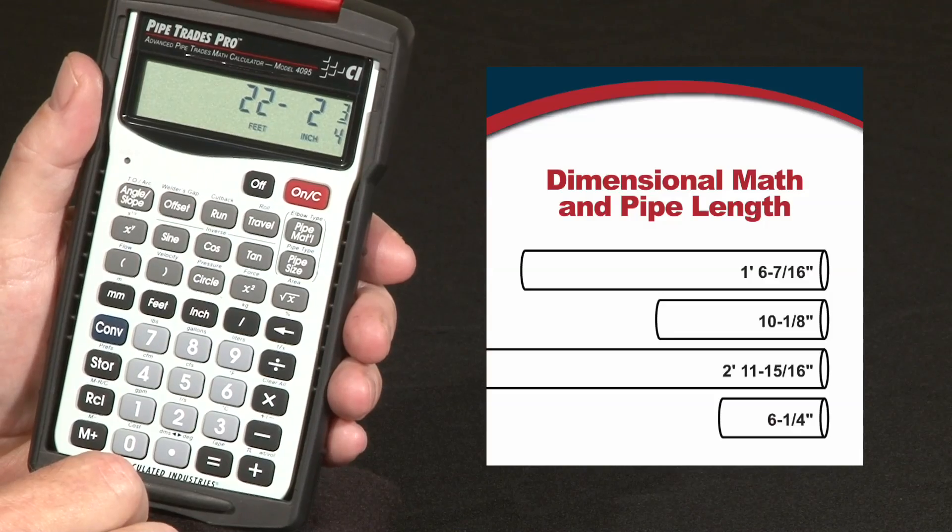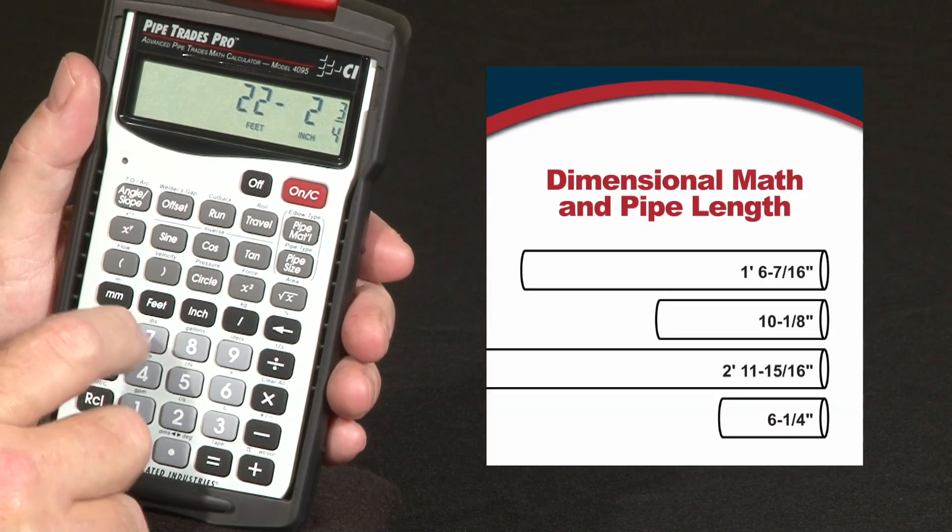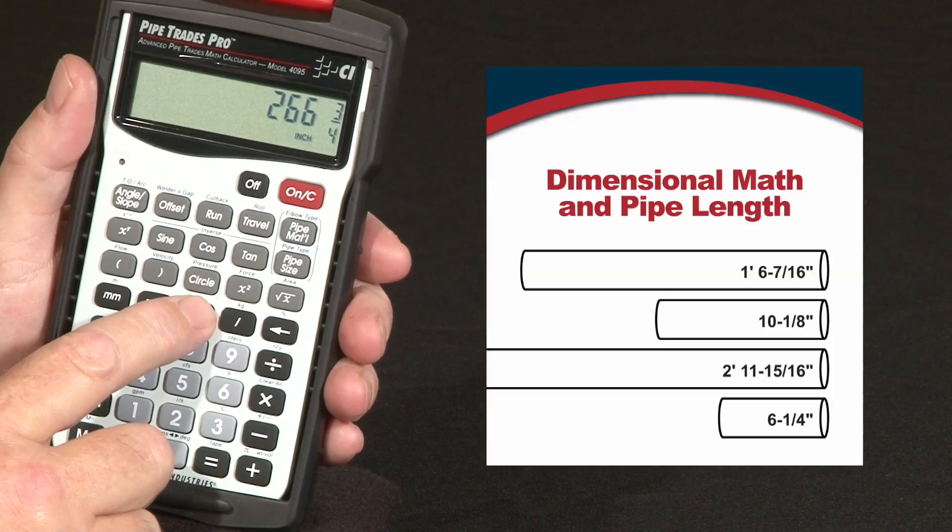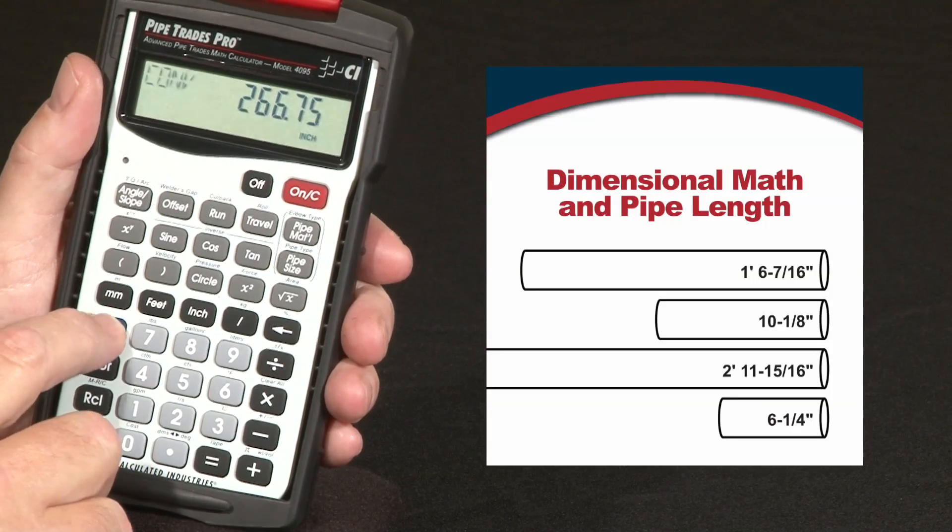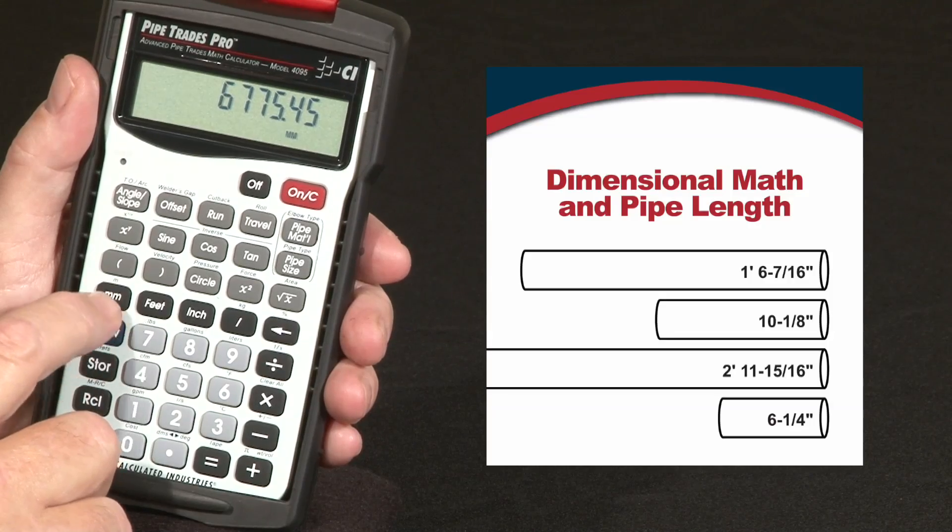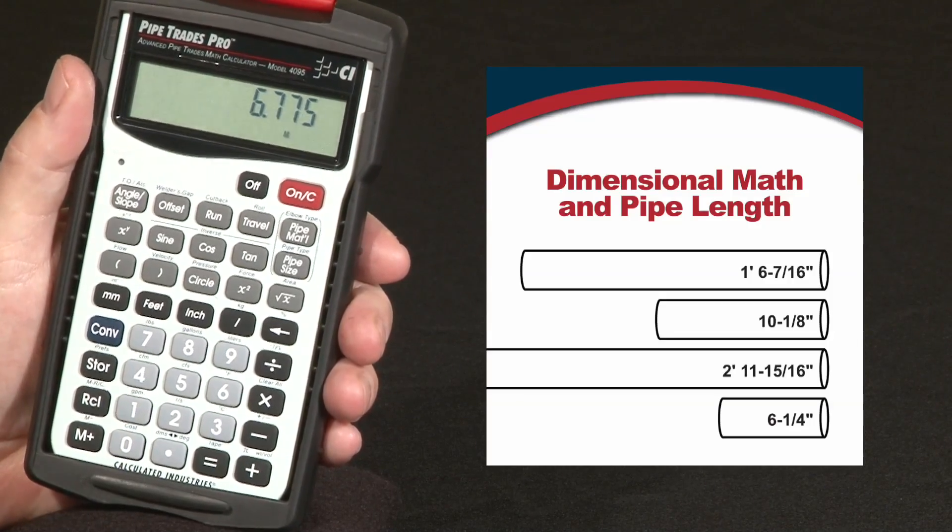And you can convert that to inches and decimal inches, and you can even convert it to millimeters and to meters. Just like that. That just shows you how easy it is to do dimensional math and conversions with the Pipe Trades Pro.